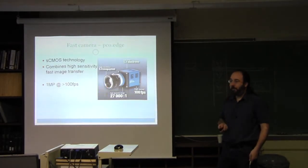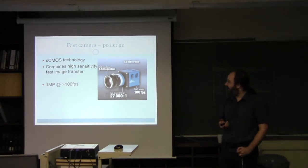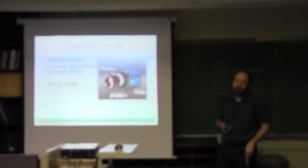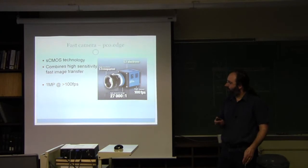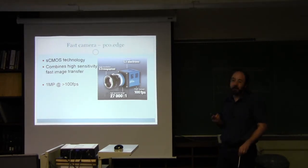In order to implement this, we have acquired a fast camera. This is a scientific CMOS technology that only reached the market about a year ago, combining high sensitivity with fast imaging speeds. The manufacturer quotes 100 frames per second for 5.5 megapixels. Of course, we're stepping down the resolution by doing a binning and areas of interest, and we want to be able to increase the frame capture speed maybe up to a thousand frames per second in order to increase our throughput.